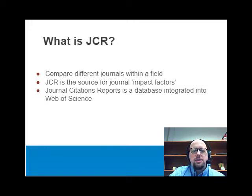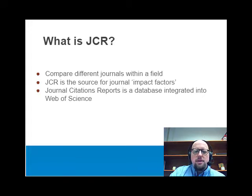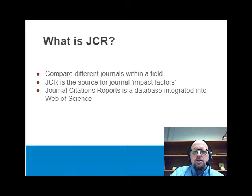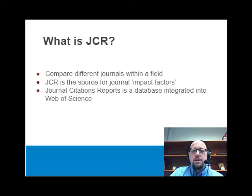JCR, or the Journal Citation Reports, is a tool used by researchers and librarians to compare different journals within a specific field. Those comparisons are done by use of a variety of metrics including the impact factor, which are calculated using journal citation information. Journal Citation Reports is a database that's part of the Web of Science database, but it's also a standalone product available through the Himmelfarb Library.